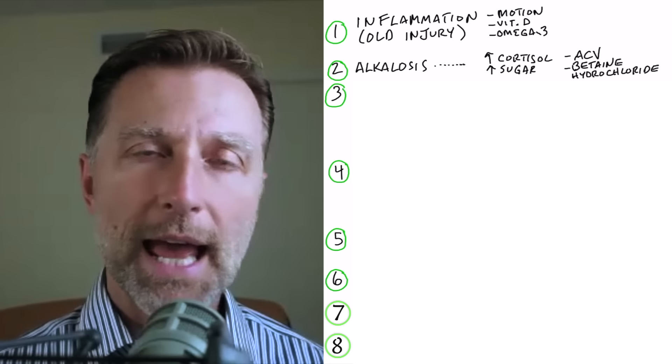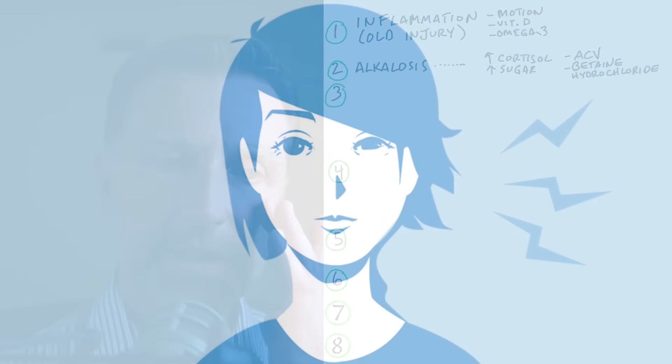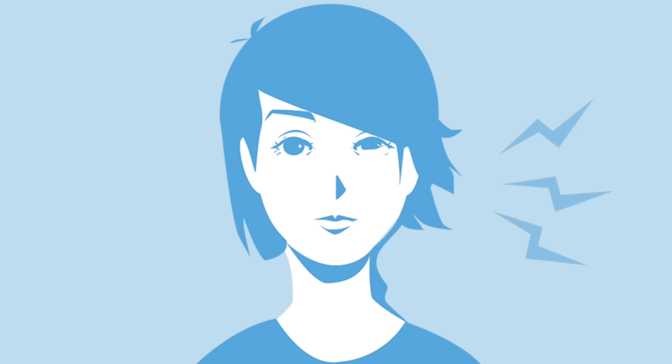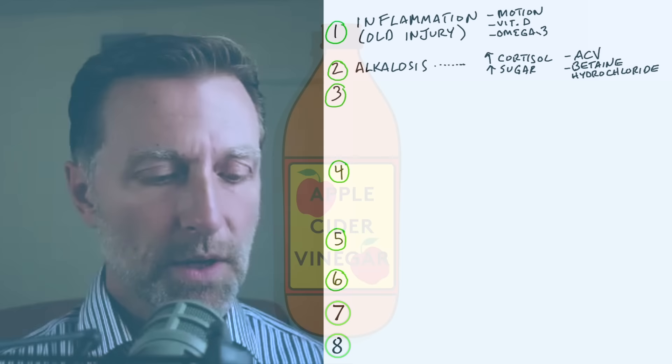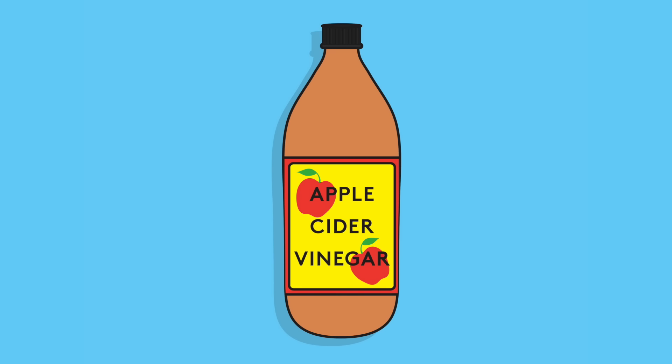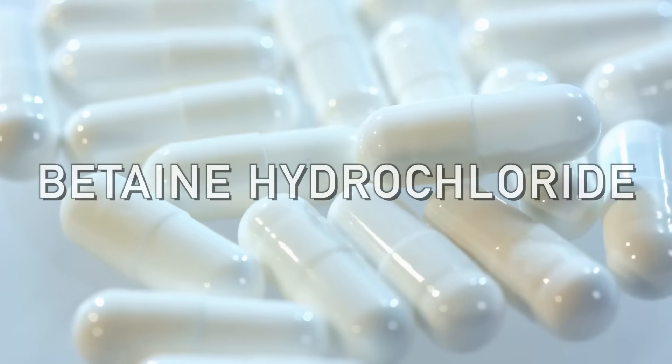And that can show up in tetany, twitching, like sometimes you have this little twitching underneath your left eyelid. That's kind of a sign of alkalosis. And this means that you need to acidify your body a little bit more. So apple cider vinegar would be a really good solution. Or start working on your stomach, like betaine hydrochloride.